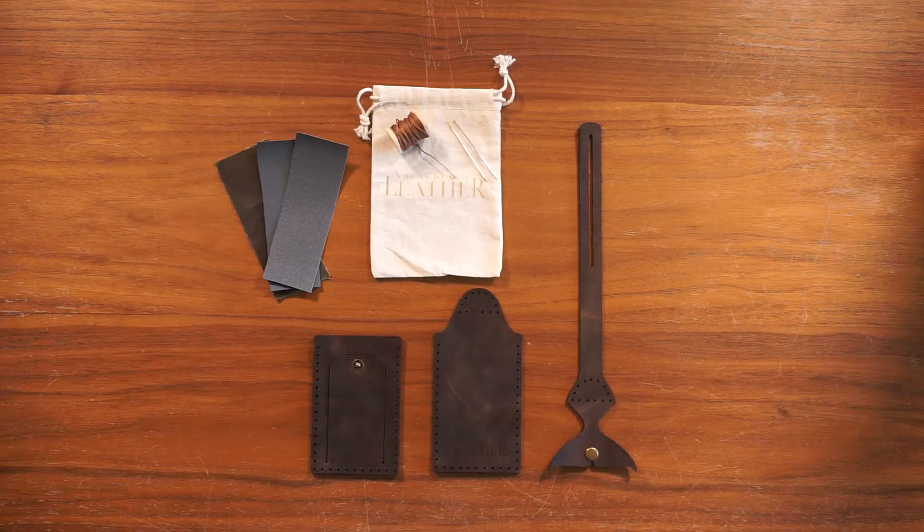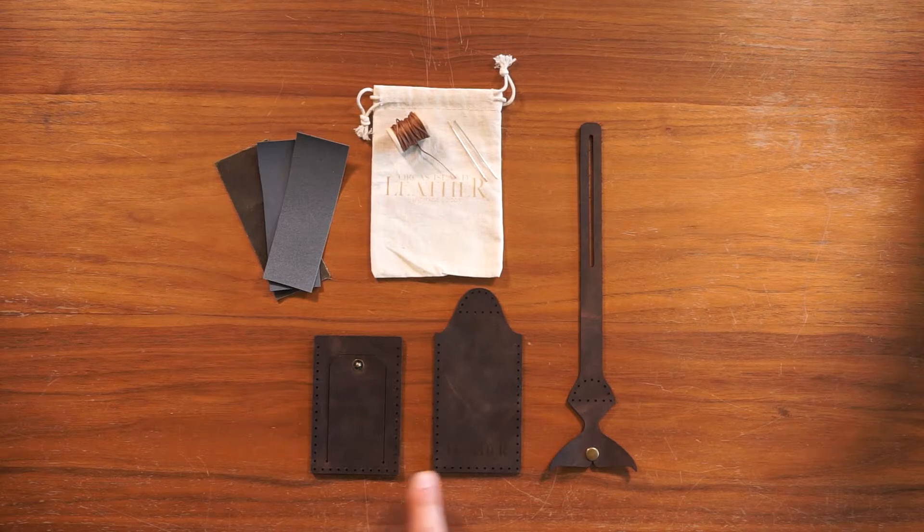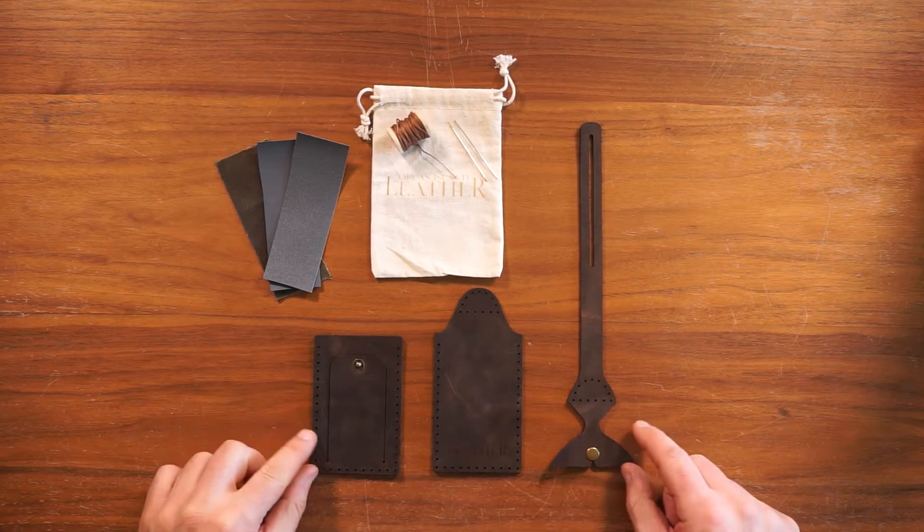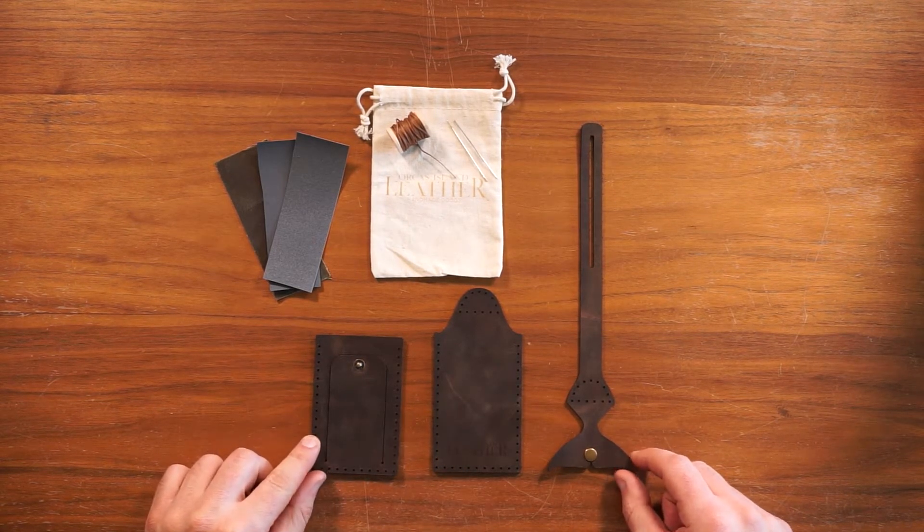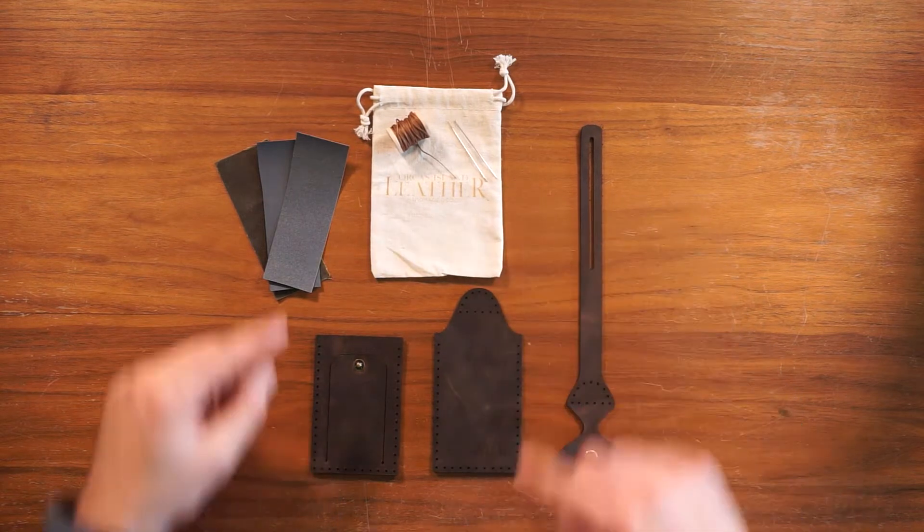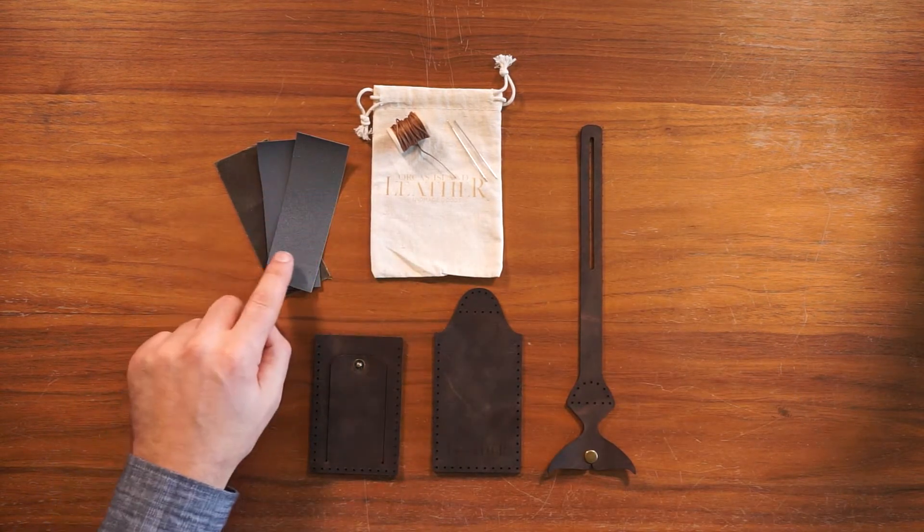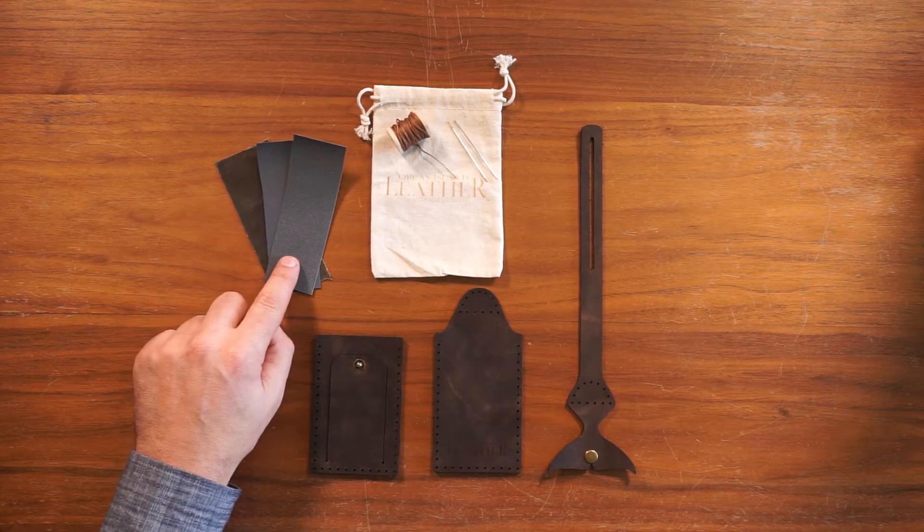Let's take a look at what comes in your kit. There are three pieces of leather, these two have the snap hardware pre-installed, two needles, plenty of thread, and two types of sandpaper plus wax canvas for edge finishing.